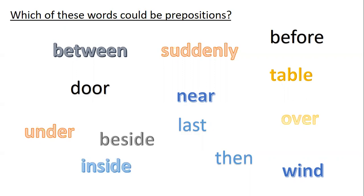If you need any help, remember a preposition — the clue is in the name: position. It tells you where something is in relation to something else. So let's have a look. There are ones on here that aren't prepositions: suddenly, door, table, wind, then, last — none of them tell you where something is in relation to something else.